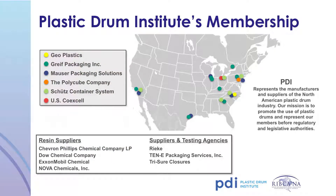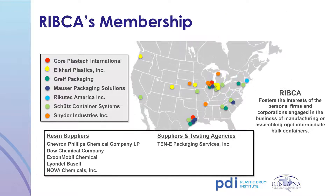The Plastic Drum Institute, or PDI, represents the manufacturers and suppliers of the North American plastic drum industry. Their mission is to promote the use of plastic drums and represent members before regulatory and legislative bodies. There are currently six plastic drum manufacturer members. The Rigid Intermediate Bulk Container Association, or RIBCA, fosters the interests of persons, firms and corporations engaged in manufacturing or assembling rigid intermediate bulk containers.